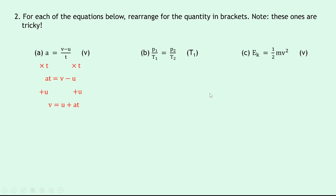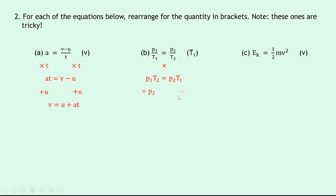Part B is another equation from the properties of matter topic: p1 over t1 equals p2 over t2, and we're asked to rearrange for t1. We've got two fractions, so we cross multiply — take the top of the left fraction and multiply by the bottom of the right fraction, and vice versa — giving us p1 times t2 equals p2 times t1. We then divide both sides by p2 to get t1 on its own, leaving us with t1 equals p1 t2 divided by p2.